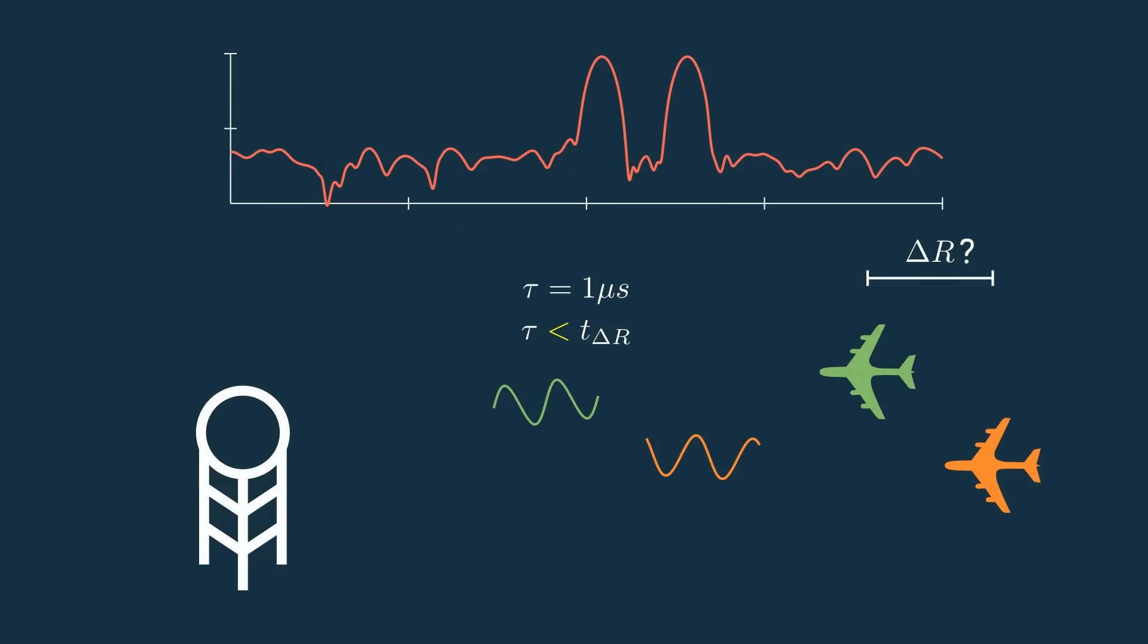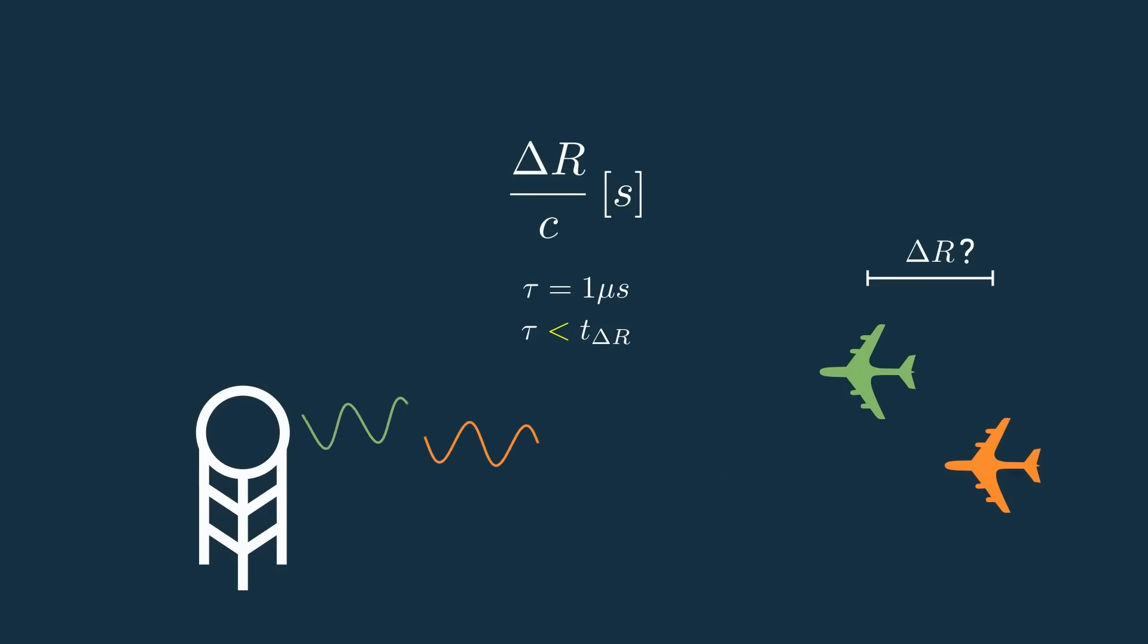Since these waves are traveling at the speed of light, dividing delta R by the speed of light will give you the time in seconds it takes to travel from one target to the other. But then it must travel back since we only measure the signal after it's been reflected, so let's add a factor of 2 here to account for that reflection.